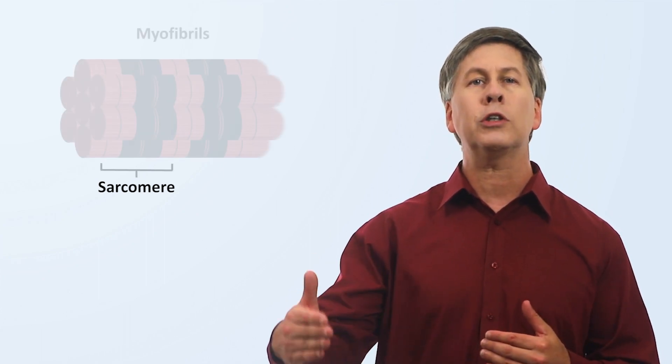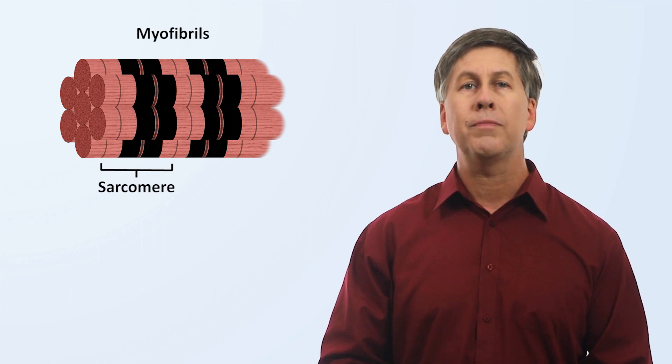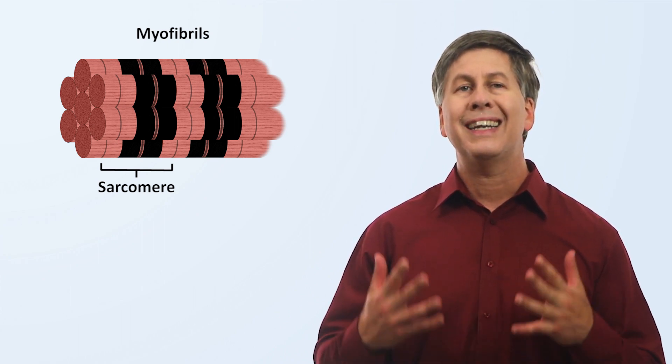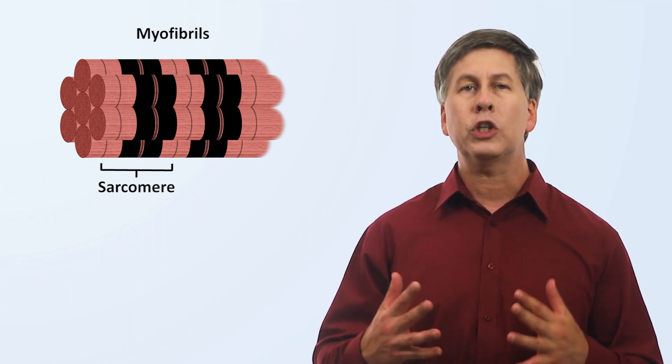Now let's take a look at the contraction side. This will involve the sarcomere, which is often referred to as the contractile unit of the cell. This means that the sarcomere is a discrete structure that repeats along the length of the myofibrils within the cardiomyocyte, and that the sarcomere contains the machinery necessary for contraction.